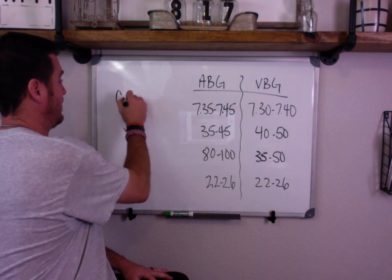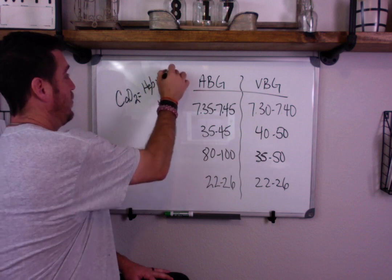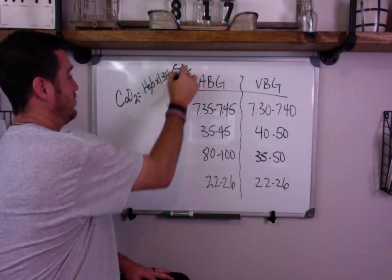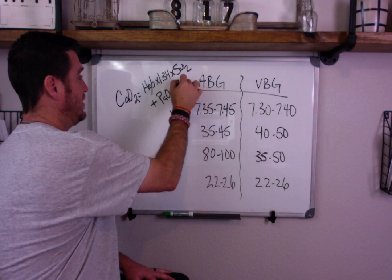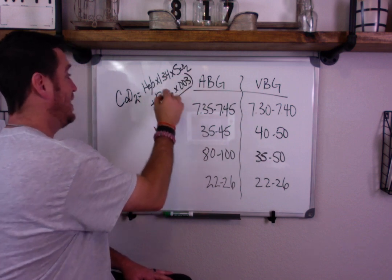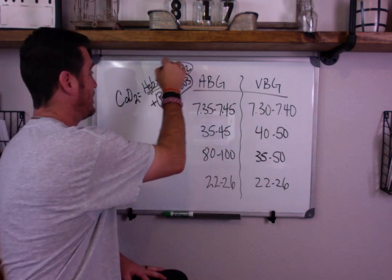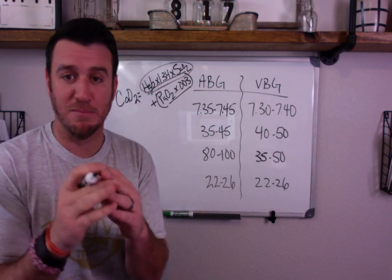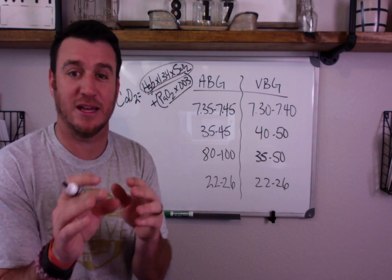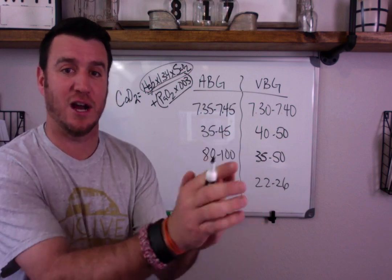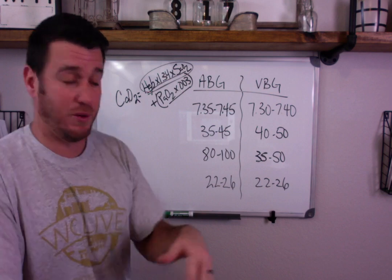To prove this, you have to go back to this formula. The CaO2 equals hemoglobin times 1.34 times SaO2. And then we add to that our PaO2 times 0.003. This is the amount of oxygen that's dissolved in plasma. This is the amount that's bound to hemoglobin.